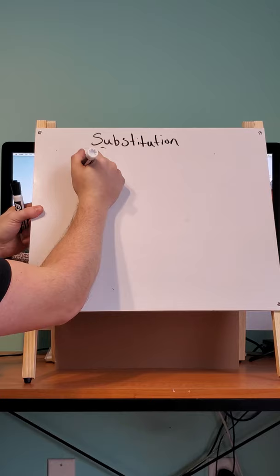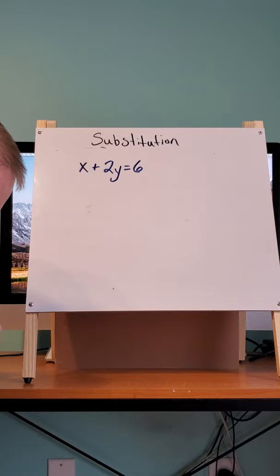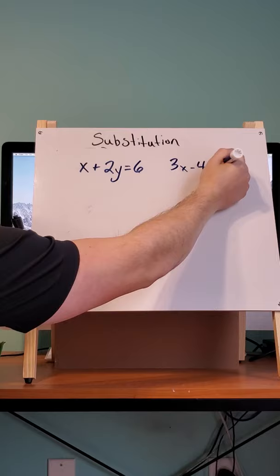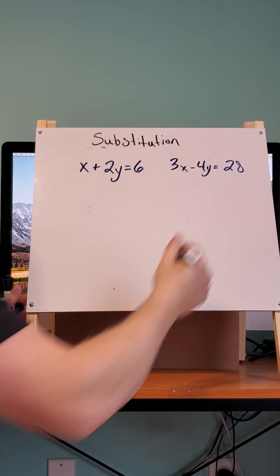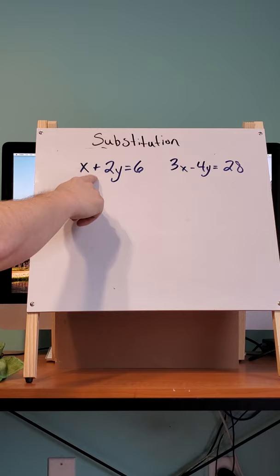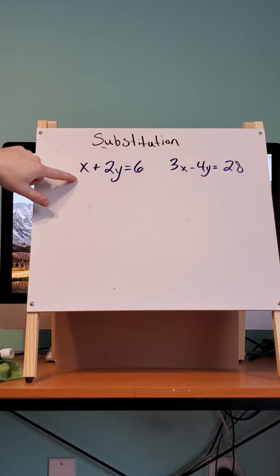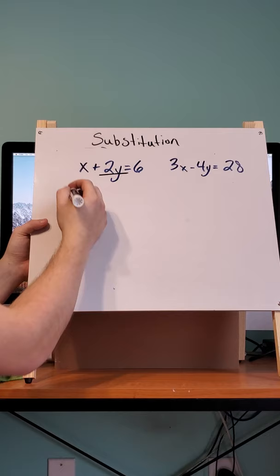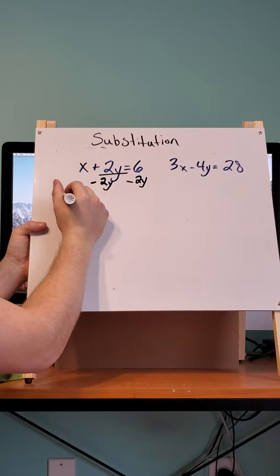So if we have the equation x plus 2y equals 6, and 3x minus 4y equals, let's use 28. Well, now we have to get one of these by themselves. And the easiest one is probably the first equation, because we have x without a number attached to it, no coefficient attached to the x. So I'm going to move the 2y over to the other side to get x by itself by subtracting it.